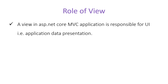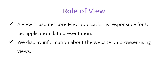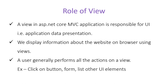Now let's understand the role of a view — why we should use views. A view in an ASP.NET Core MVC application is responsible for UI, that is, application data presentation. Views are responsible for whatever you see on the browser of a client. We display information about the website on browsers using views. A user generally performs all actions on a view — for example, clicking buttons, filling forms, and interacting with other UI elements.